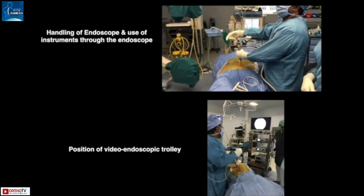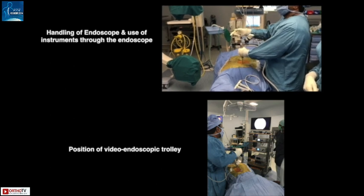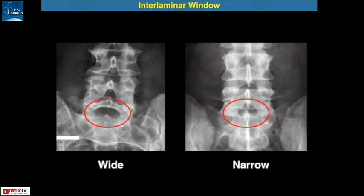This is a short video showing the handling of the endoscope and the position of the video endoscopic trolley. Once the cannula is inserted, there are two possibilities commonly seen. If there is a wide interlaminar window, as commonly seen at the L5S1 junction, the traversing root is not covered by the facet joint, and here, just by making a small window in the ligamentum flavum, it is possible to remove the herniation completely.